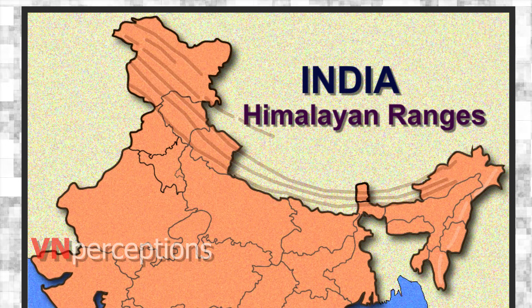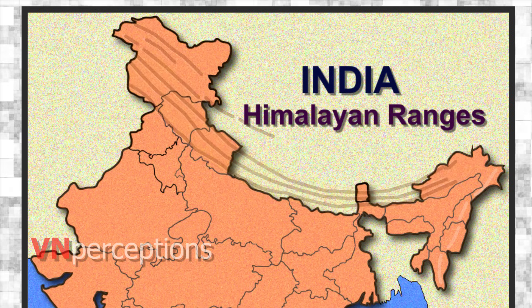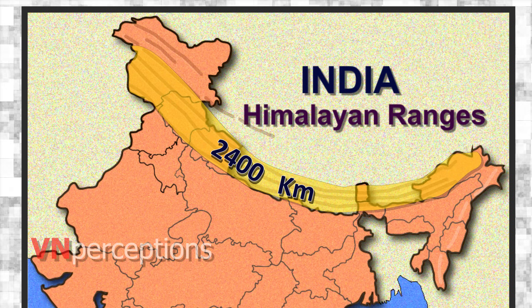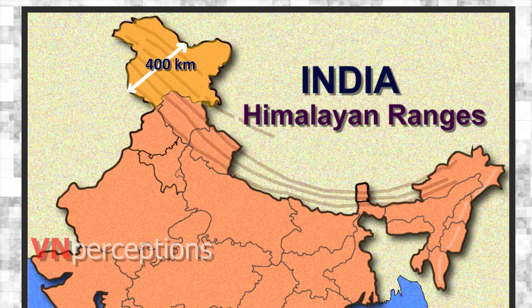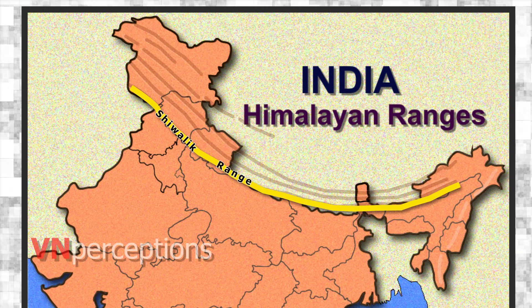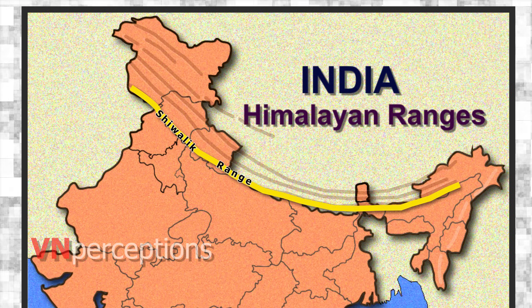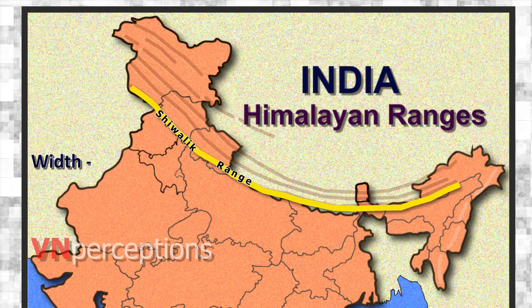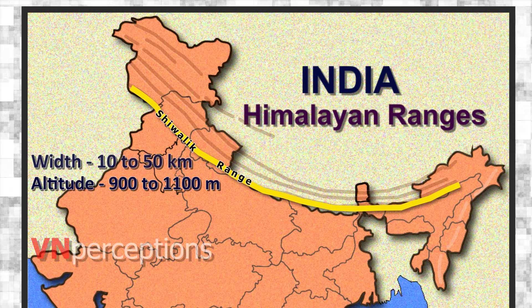From west to east, the Himalayas are divided broadly into three mountainous regions: western, central and eastern. The Himalayas are 2,400 km long and their width varies from 400 km in Kashmir to 150 km in Arunachal Pradesh. The Shivaliks are the southernmost and geologically youngest east-west mountain chain of Himalayas. They have many sub-ranges and extend from Arunachal Pradesh through Bhutan to West Bengal and further westward through Nepal and Uttarakhand, continuing into Himachal Pradesh and Kashmir. They extend over a width of 10 to 50 km and have an altitude varying between 900 to 1,100 m.